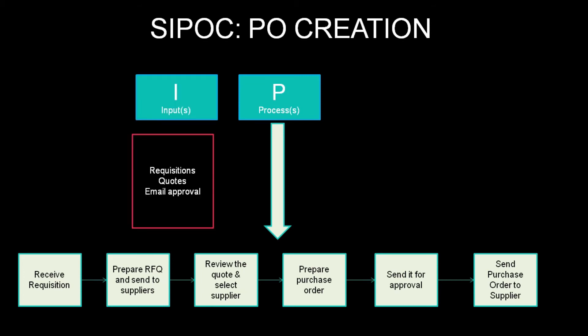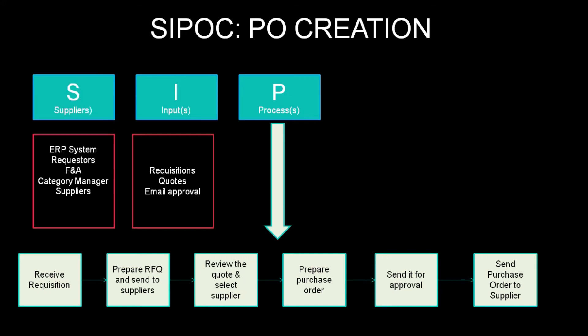What are the inputs needed for this process? You need requisitions, quotes, and email approval. The requisitions come from the ERP system or requesters, the Finance and Accounting team and the category manager send the email approval, and the quotes are sent by the suppliers.